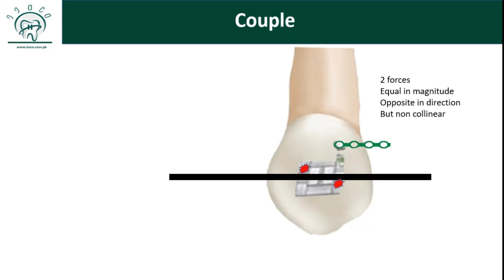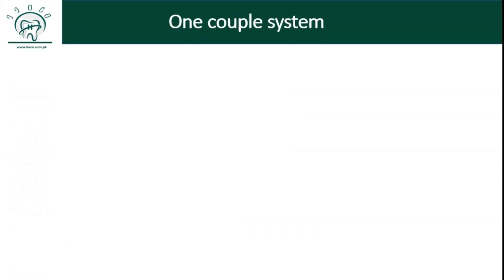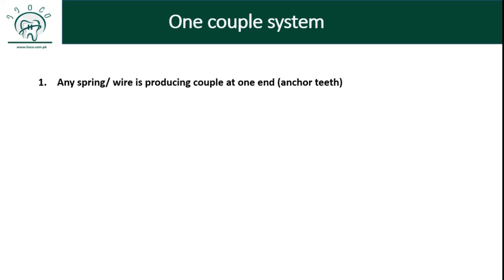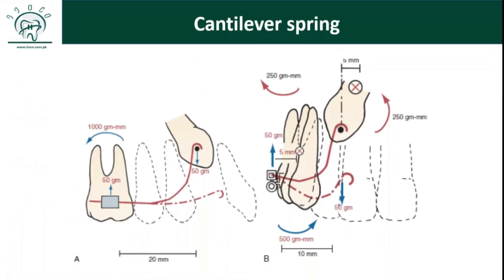Today we will discuss the one couple system. According to William Prophet, any force system meeting two criteria is called a one couple system: any spring producing a couple at one end — the anchor side — while the tooth to be moved receives only a single force. The example Prophet gives is a cantilever spring used to bring an ectopic canine into the arch. The molar receives a couple via a buccal tube, while the canine receives a single force through an attachment like a lingual button — not a bracket.